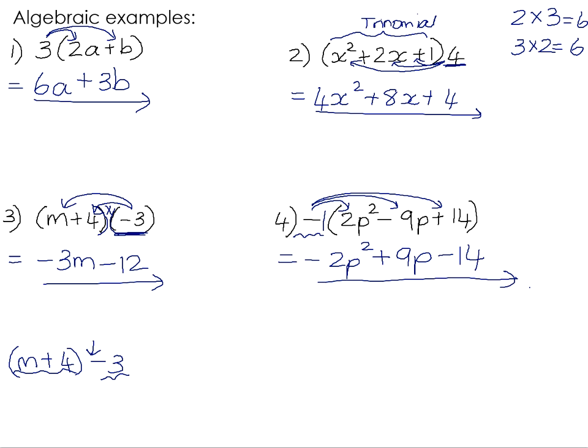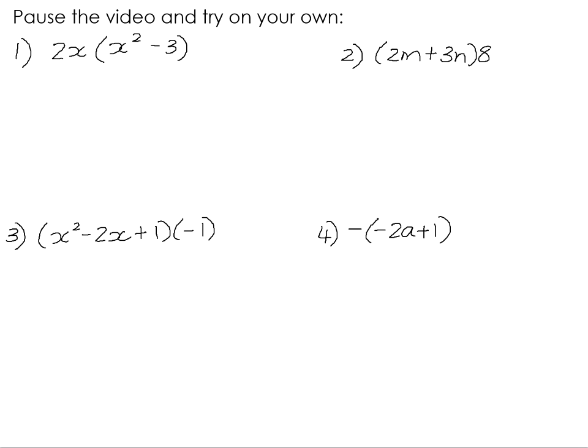In your homework book, there are four examples for you to try on your own, so please pause the video here and try those. Number 1, 2x multiplied by x squared minus 3. We're going to distribute the 2x into the bracket. Remember that when you multiply powers with the same base, you need to add the exponents together. So the exponent on the x is positive 1. So 2 times 1 is 2. x to the power of 1 times x squared is x cubed, 1 plus 2 is 3. And then a negative times a positive is a negative. 2x times 3 is 6x.